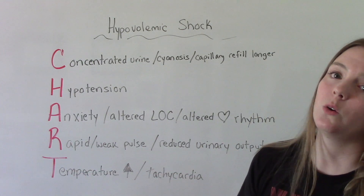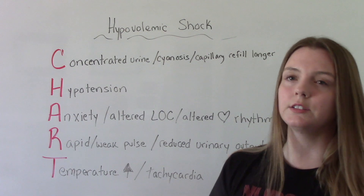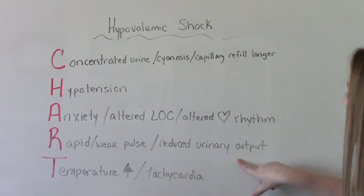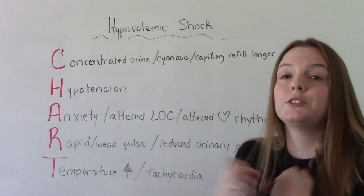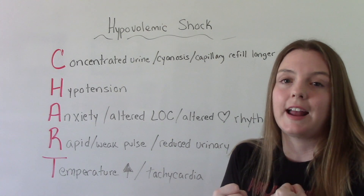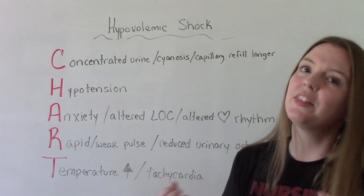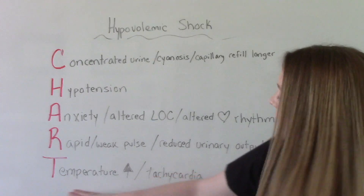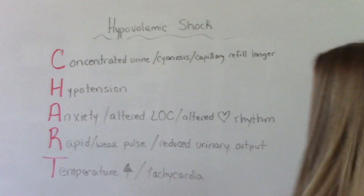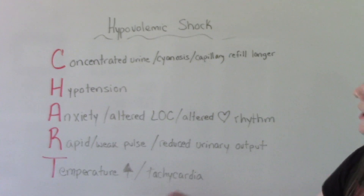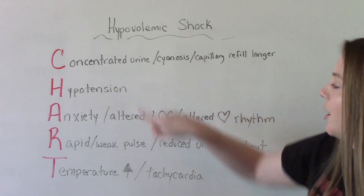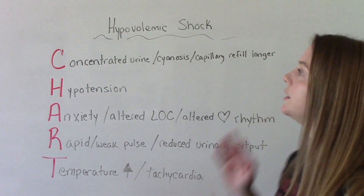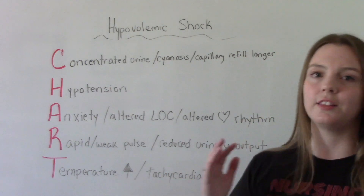R: they could have a rapid or weak, hard-to-find pulse — a thready pulse, like a plus one. Reduced urinary output, because the body is trying to preserve all of the volume and fluid it has. T: they can have an increased temperature, a fever, and they're going to be tachycardic. Tachycardia and hypotension are the hallmark signs of shock — patients with hypovolemic shock are going to have that.